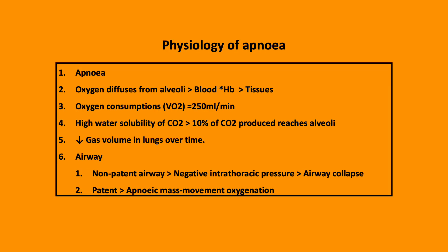The physiology of apnea is based on three key principles: oxygen usage, CO2 production, and alveolar pressure. During a period of apnea, oxygen is still consumed at 250 mL per minute, and the FRC provides the storage of oxygen, which is slowly consumed during this time.